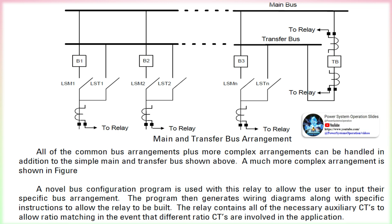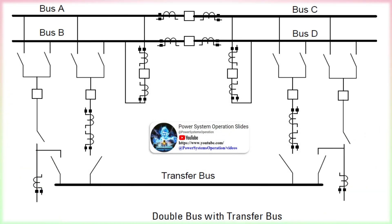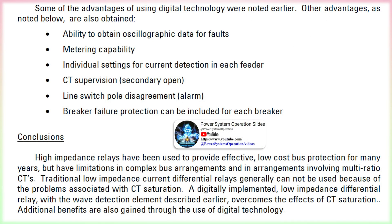In some bus arrangements, it is common to switch lines to different buses to facilitate operation and maintenance. In this arrangement, the tiebreaker (TB) is connected to one of the lines through the transfer bus while the regular line breaker is removed from service. Switching is accomplished via the line switches (LS). In the low impedance differential relay, auxiliary switches A and B associated with the line switches are brought into the relay, and the state of these switches is used to determine which breakers are connected to which bus so that the correct differential zones can be established. The CTs are always connected to the relay, so CT switching is not required because the zone of protection is determined via software. Separate trip outputs are provided for each breaker, so only those associated with the faulted bus will be tripped — one relay can protect multiple buses.